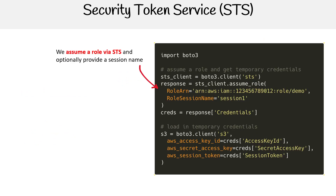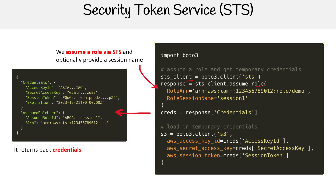Here's an example in Python. The idea is that we are calling the STS client, and then from here we're going to assume a role, which is one of the API actions that we can utilize. It's going to return back the credentials, and then we can load the credentials back into the client. Now any calls with boto3, the AWS Python SDK, are going to use those temporary credentials.